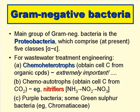The main group of gram-negative bacteria is the proteobacteria, and these are currently classified in five classes, alpha to epsilon. From our point of view as wastewater treatment engineers, three general groups of the proteobacteria are important. First, the chemoheterotrophs, which get the carbon they need to make their cells from organic compounds. Then there are the chemoautotrophs, which get their cell carbon from dissolved CO2. An important group of chemoautotrophs is the nitrifiers, which oxidise ammonia to nitrite and then to nitrate. And thirdly, there is a group of photosynthetic bacteria, including the purple bacteria and some green bacteria.